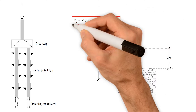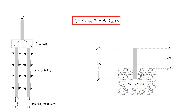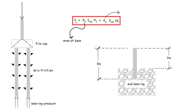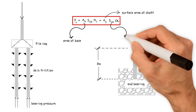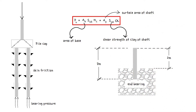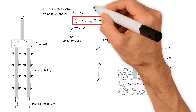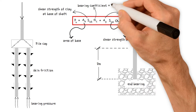Now we'll use a simple formula to determine the ultimate pile capacity in clay soils. AB is the area of base. AP is the surface area of shaft. SUA is the shear strength of clay of shaft — this can vary and can be summed in discrete lengths based on site investigation data. SUB is the undrained shear strength of clay at the base of shaft. NC is the bearing coefficient, commonly 9.